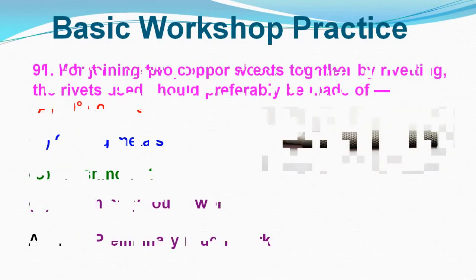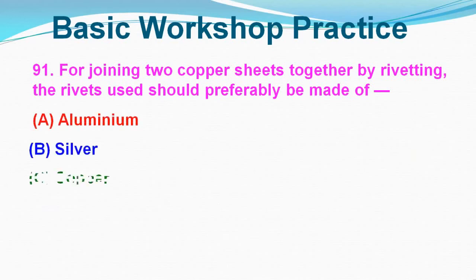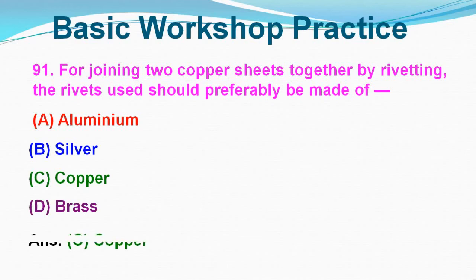Question No. 91: For joining two copper sheets together by riveting, the rivets used should preferably be made of which material? Option A: Aluminium, Option B: Silver, Option C: Copper, Option D: Brass. Correct answer is Option C, Copper.